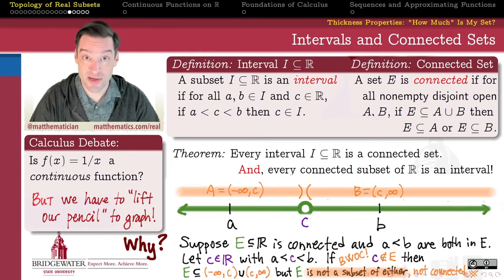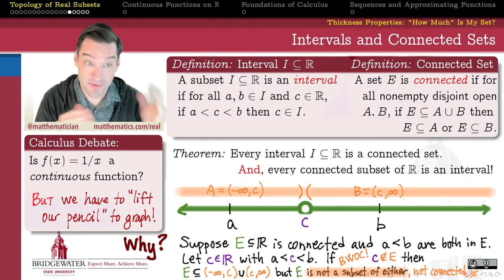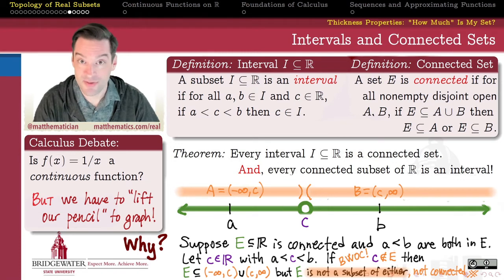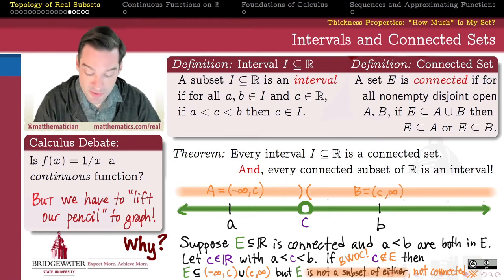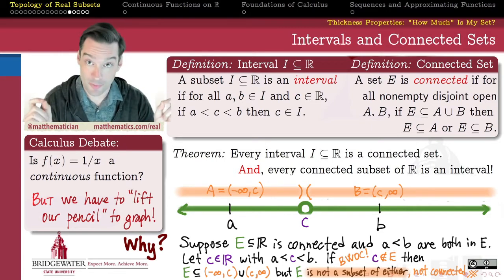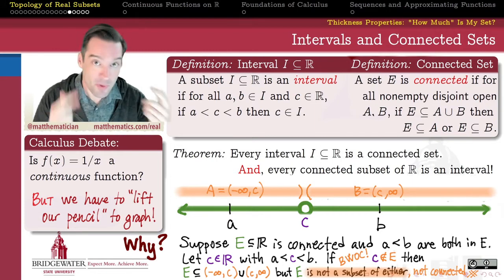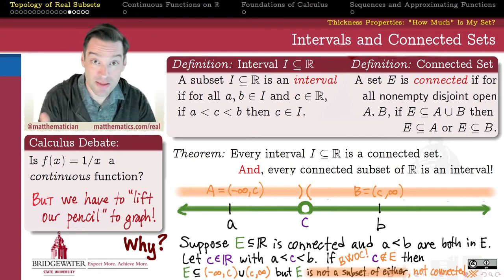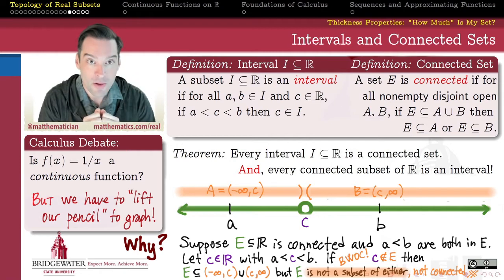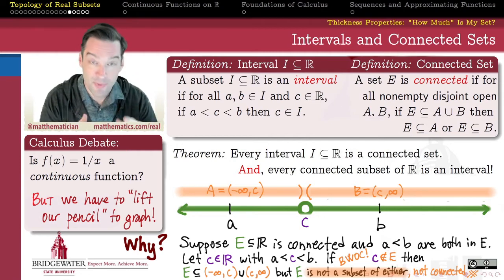So a connected set must be an interval. You can fill in the gaps and argue the other direction — that every interval of the real line is a connected set. This is a really nice result: at least for subsets of the real numbers, using the standard real number topology that comes from its ordering, there is no difference between the notion of connectedness and the notion of being an interval. When we picture a friendly subset of the real numbers and picture an interval, we're picturing all of the examples of connected subsets of the real numbers.